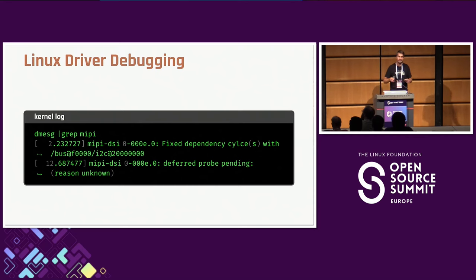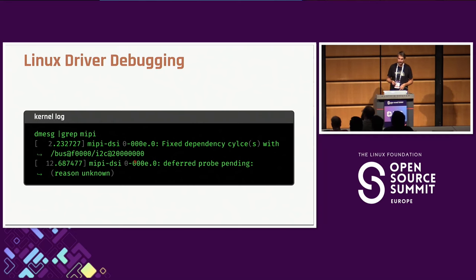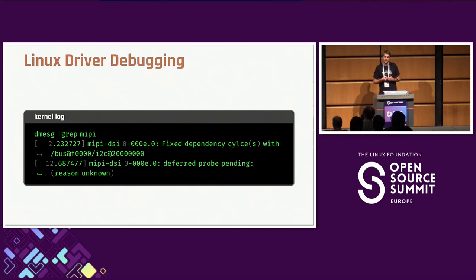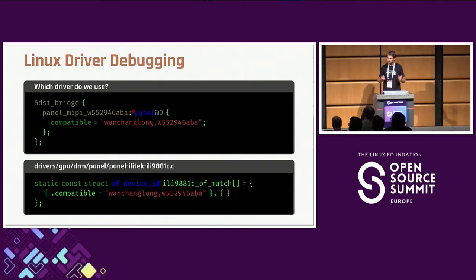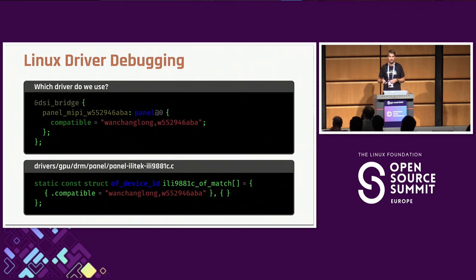Rather than grep for specific strings, take the whole kernel log and check what failed. Here we can see that the MIPI DSI driver says 'probe deferred' — meaning it's waiting on a dependency that isn't there yet. We need to figure out what exactly the dependency is. Checking the device tree, we find a 'panel-one-shallong' entry using the 'panel-eltech' driver. We now know which driver to analyze and can add debug information.